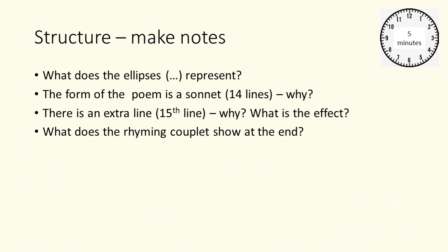Structure. I would like you to make notes on the following: What does the ellipsis — the three dots — represent? The form of the poem is a sonnet, fourteen lines — why? There is an extra line, a fifteenth line — why? What's the effect? And what does the rhyming couplet show at the end? Pause the video for five minutes to answer these questions.